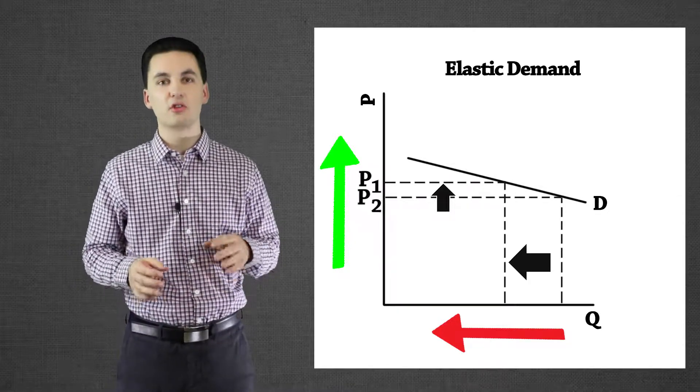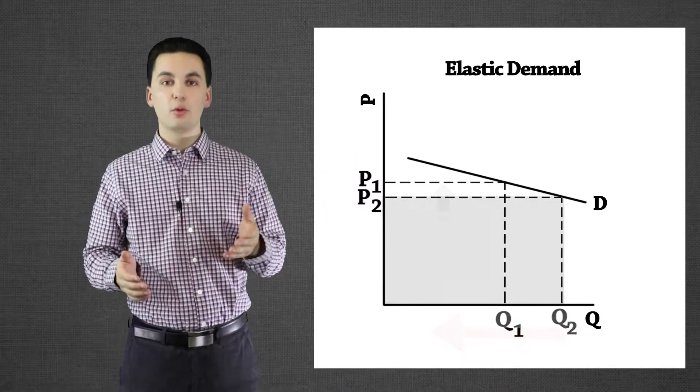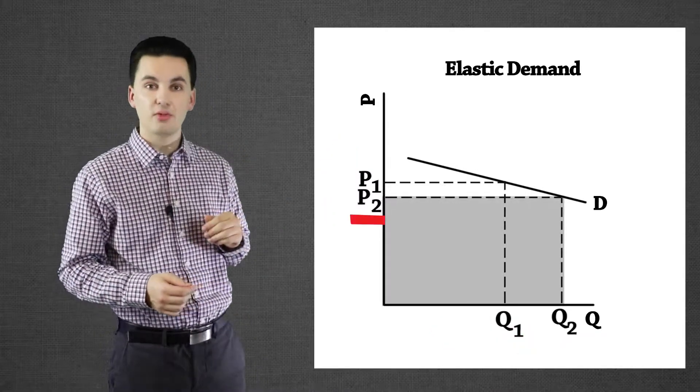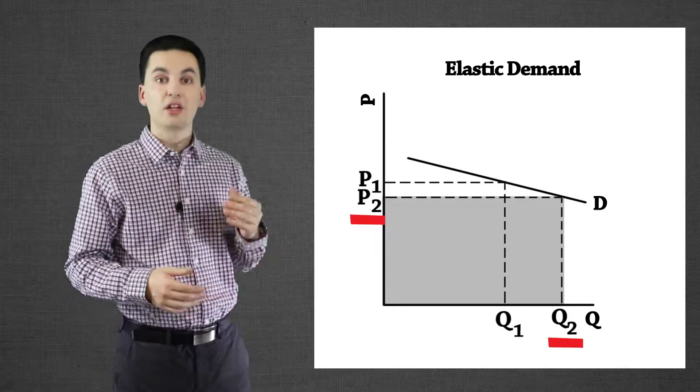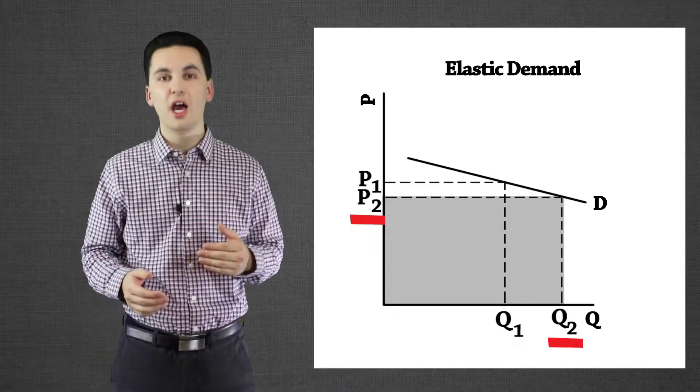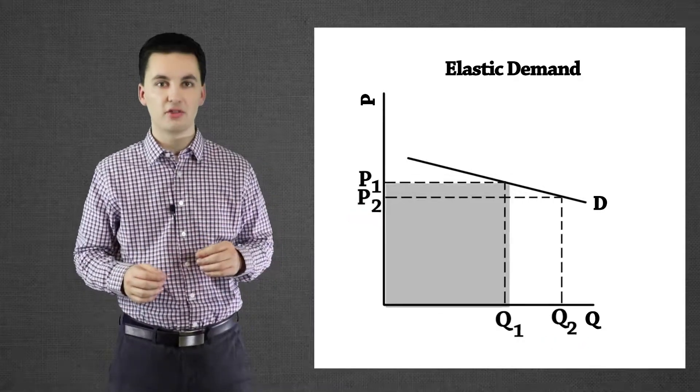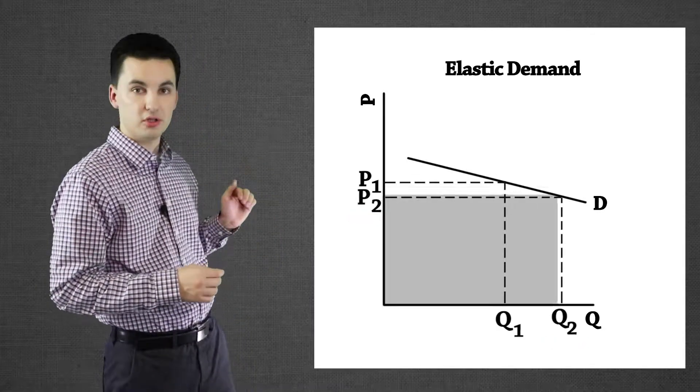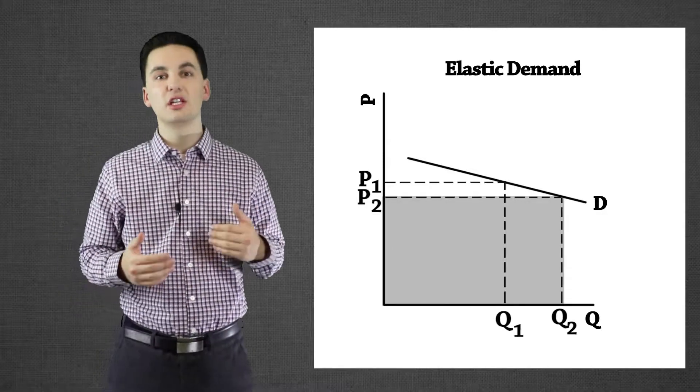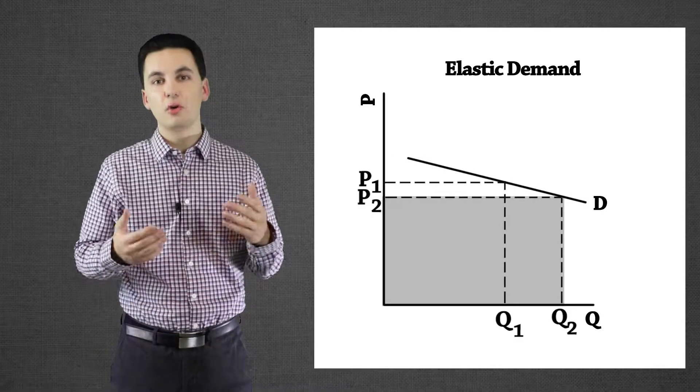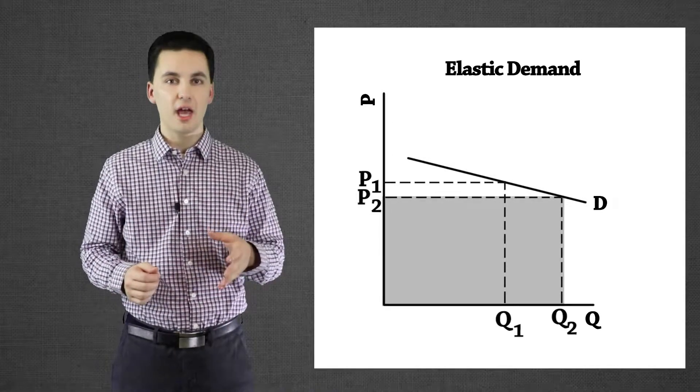Another thing we can see from our chart is our total revenue. To figure out our total revenue, we'll take our price and times it by the quantity there. By multiplying the price by our quantity we'll see how much money we are bringing in. With elastic demand we can see that if we move from P1 to P2 we are actually going to see an increase in our total revenue even though our price is decreasing. So elastic goods will have more sales.